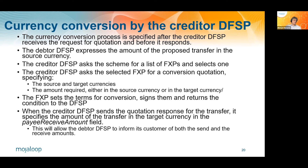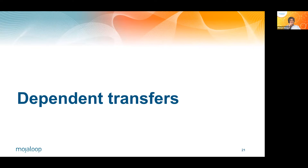And that means that the debtor DFSP will be able to respond to its customer with both the send amount and the receive amount in their different currencies, and again it won't have to do anything different from what it does now. So now I want to talk a little bit about how we're going to ensure deterministic outcomes here, and our idea is to do it via a concept which we're calling at the moment dependent transfers.